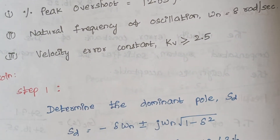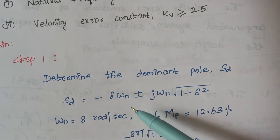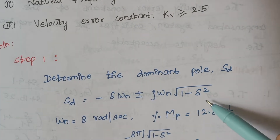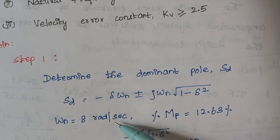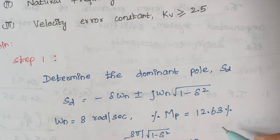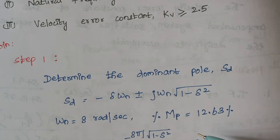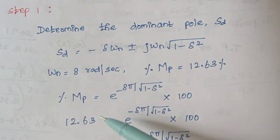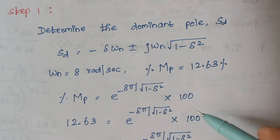Step one is to determine the dominant pole. The dominant pole is given by the formula: SD = minus zeta*omega_n plus or minus j*omega_n * sqrt(1 - zeta^2). Here the value of omega_n is 8 radian per second and peak overshoot is 12.63. These are the data given in the problem.